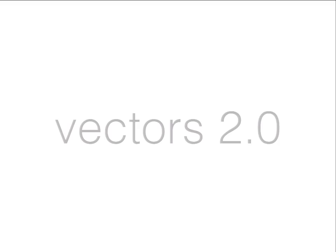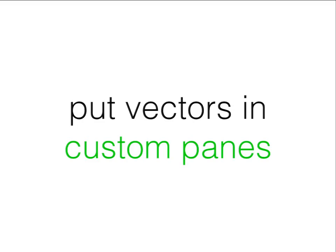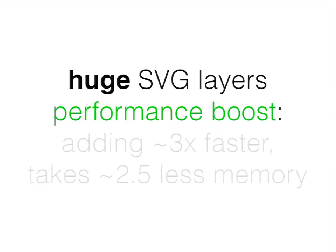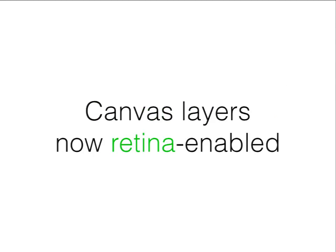I rewrote pretty much the whole code that draws vector data in Leaflet from scratch. Now you can use both SVG and canvas renderers on the same map, interleave them on different panes with tile layers — much more powerful. There's a huge performance boost: adding vector layers is about three times faster and takes two and a half times less memory. The canvas layer also got a huge performance boost due to partial draws and faster mouse events with spatial indexing. It's also retina-enabled.